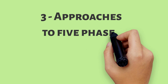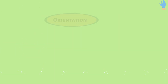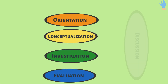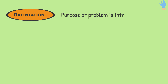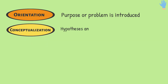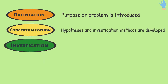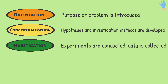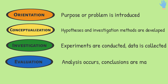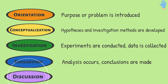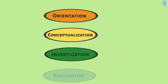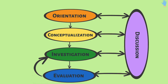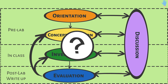Approaches to five phases of inquiry. To move towards more inquiry-based teaching in the lab, we should consider five phases of inquiry, which span the full arc of student activities from pre-lab prep to post-lab write-up: orientation, where a purpose or problem statement is introduced; conceptualization, where hypotheses and investigation methods are developed; investigation, where experiments are conducted and data is collected; evaluation, where analysis occurs and conclusions are made; and discussion, where outcomes are communicated and reflected upon. There are close connections between the five phases, and performing the lab can involve iterative loops rather than a direct line. Thinking about your own lab, at which steps do your students make decisions that determine the direction of the lab?